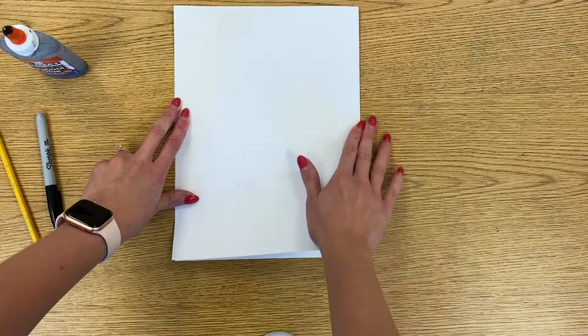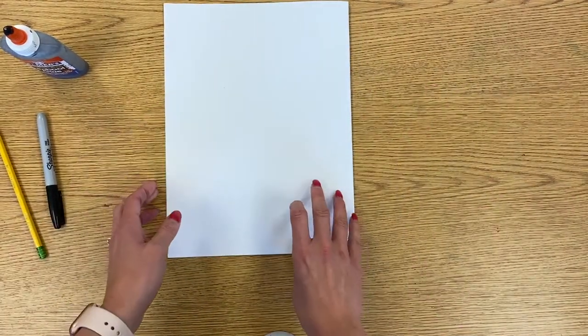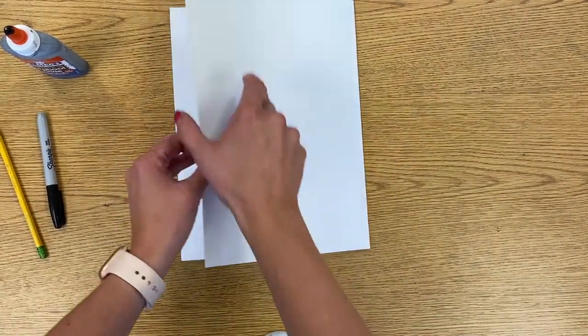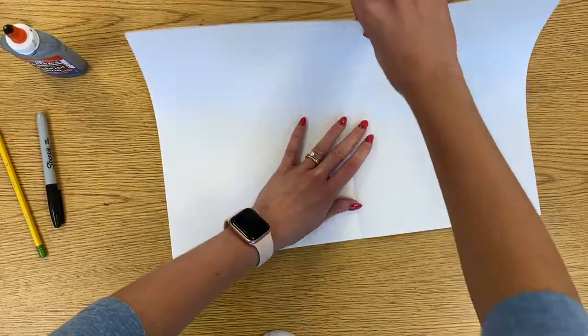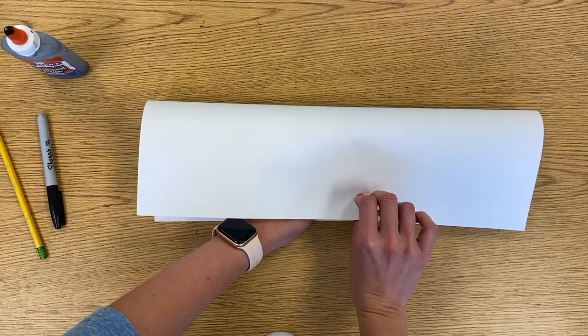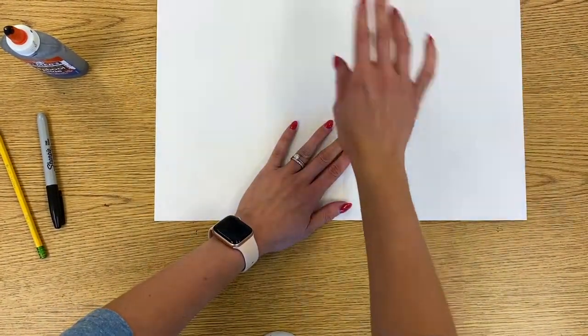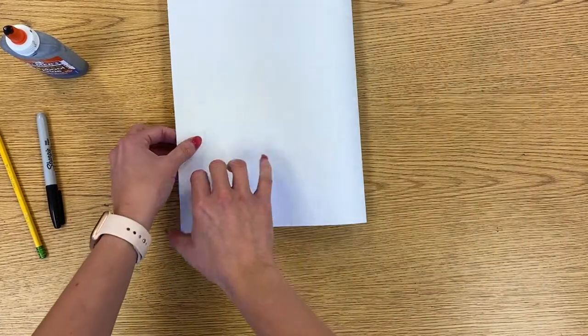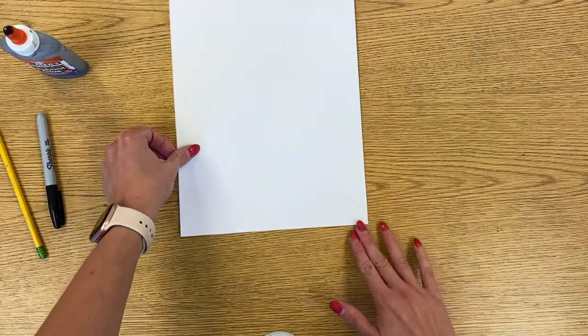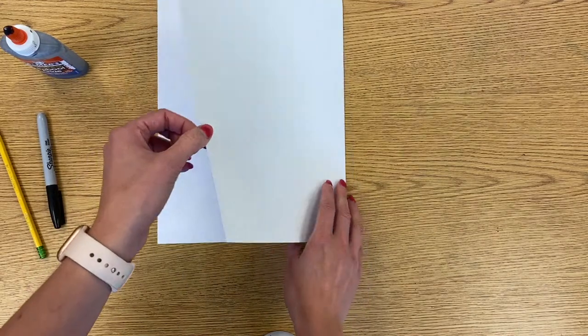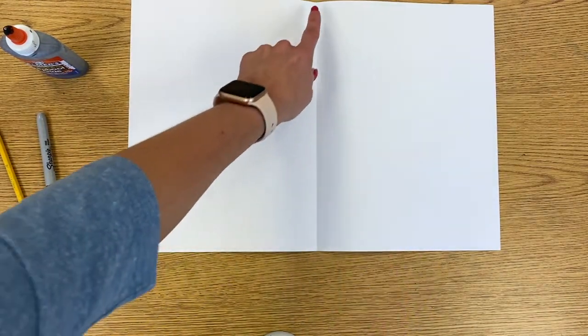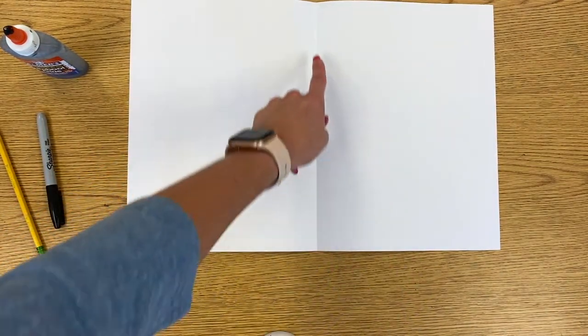So that means I am folding side to side. I am not folding top to bottom. This would be the hot dog way and that way is going to be too skinny for this. So I need to fold it side to side or hamburger way. And then when you open up your paper you should have a vertical line that goes down the middle of your paper.